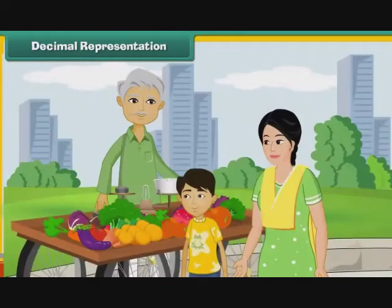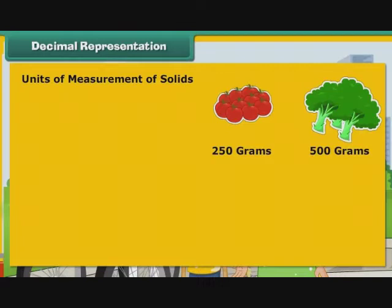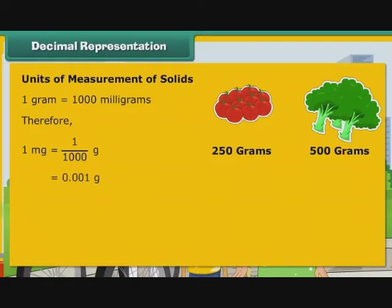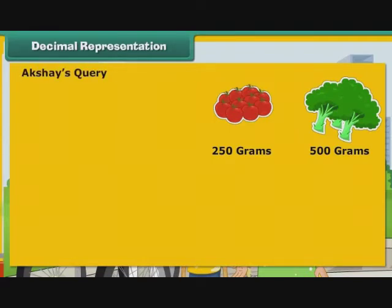Akshay accompanied his mother to the vegetable market, where he saw his mother buy 250g and 500g of different vegetables. He wanted to express the quantities purchased as kilograms. Akshay must first understand the units used to measure quantities of solids. 1 gram is equal to 1000 mg. Therefore, 1 mg is equal to 1 by 1000 gram, that is 0.001 gram. 1 kilogram is equal to 1000 grams. Therefore, 1 gram is equal to 1 by 1000 kg, that is 0.001 kg.